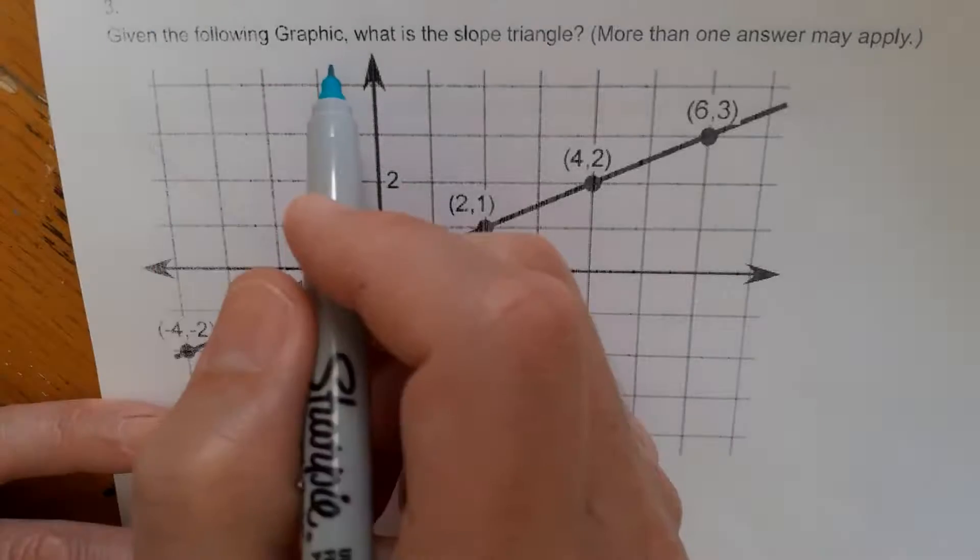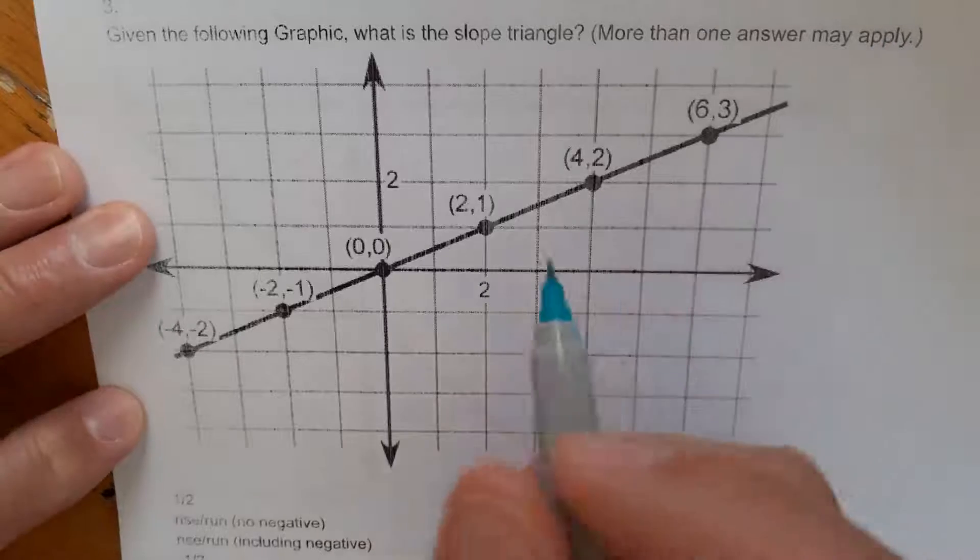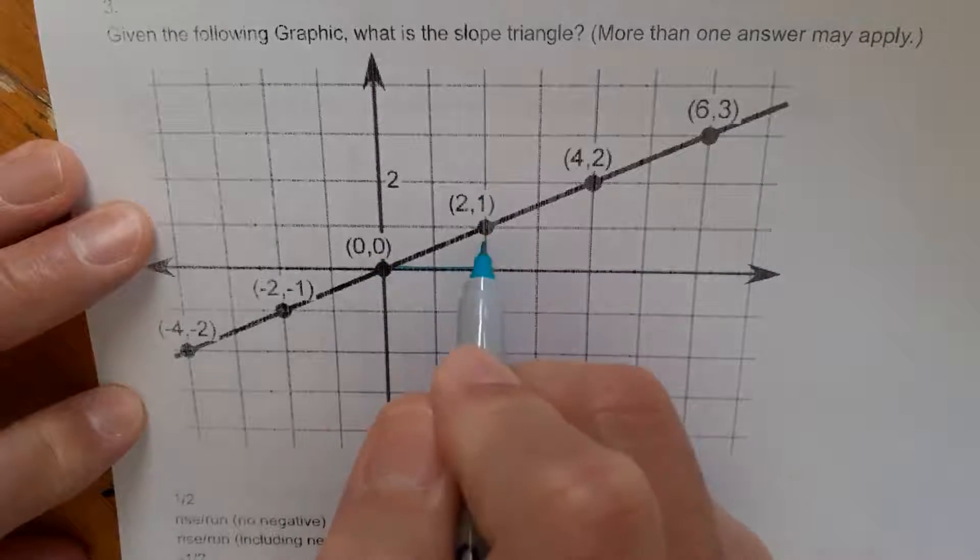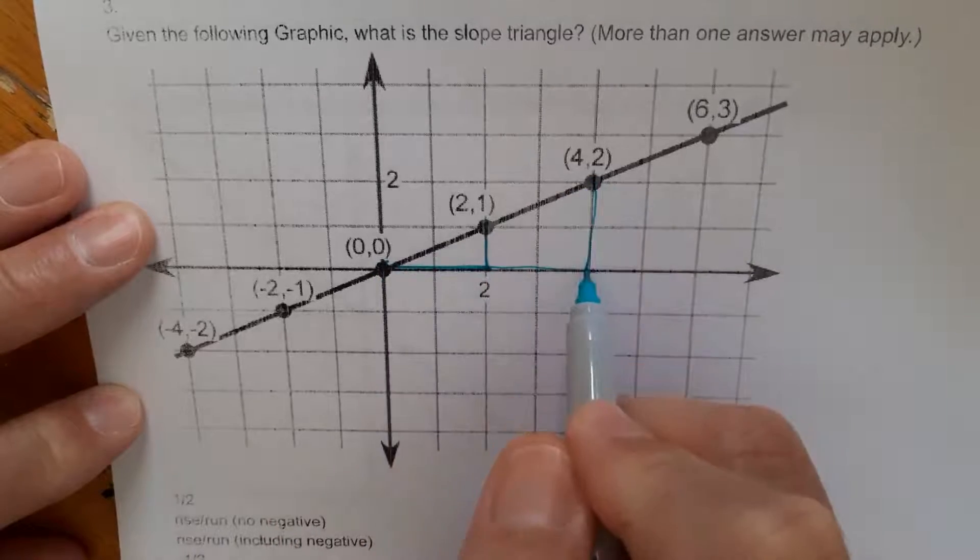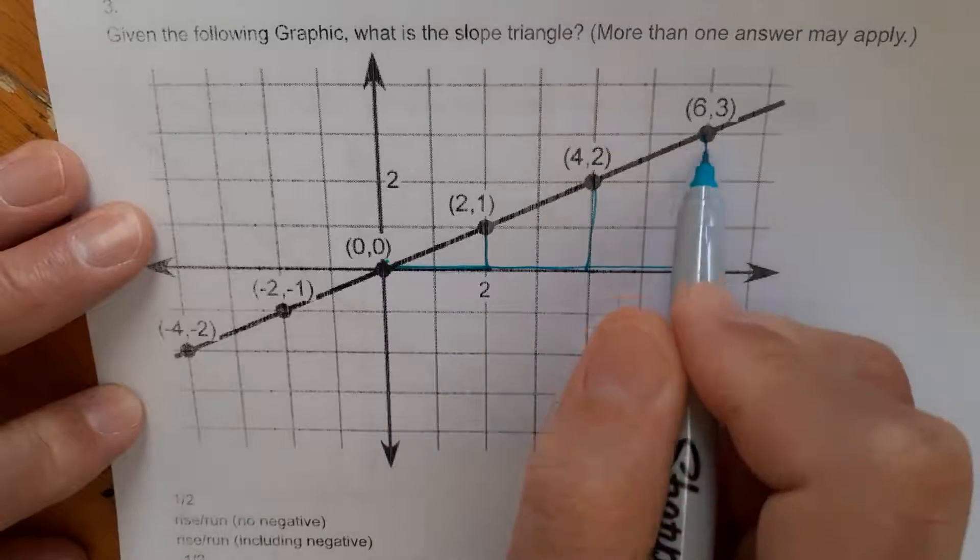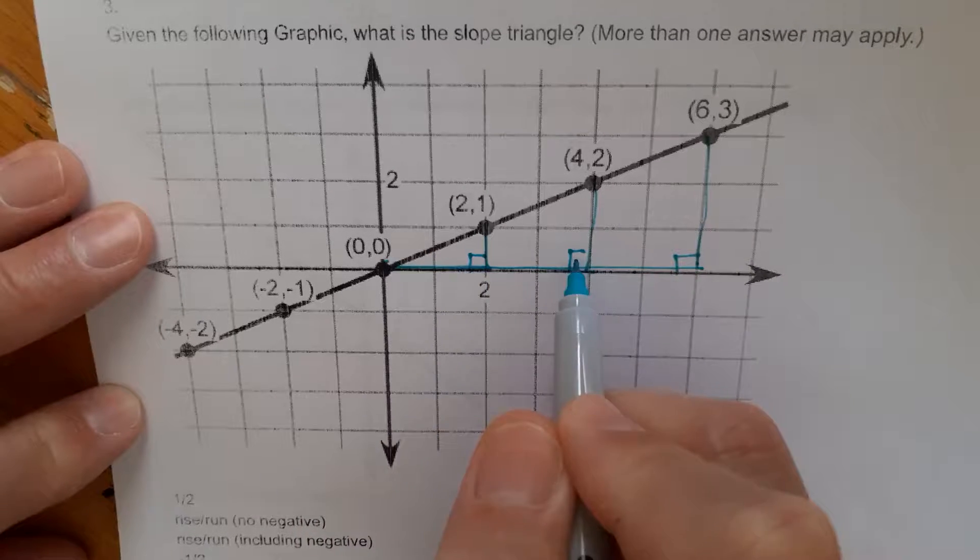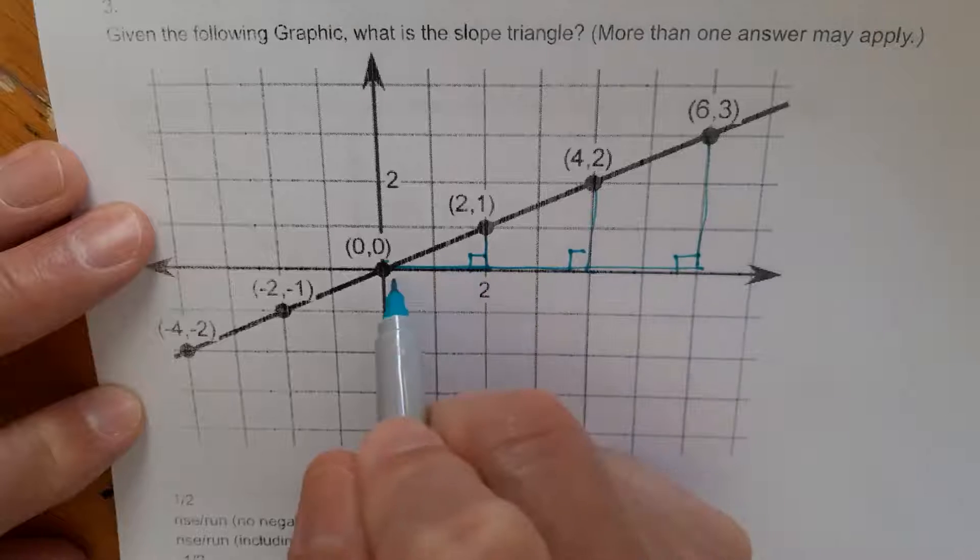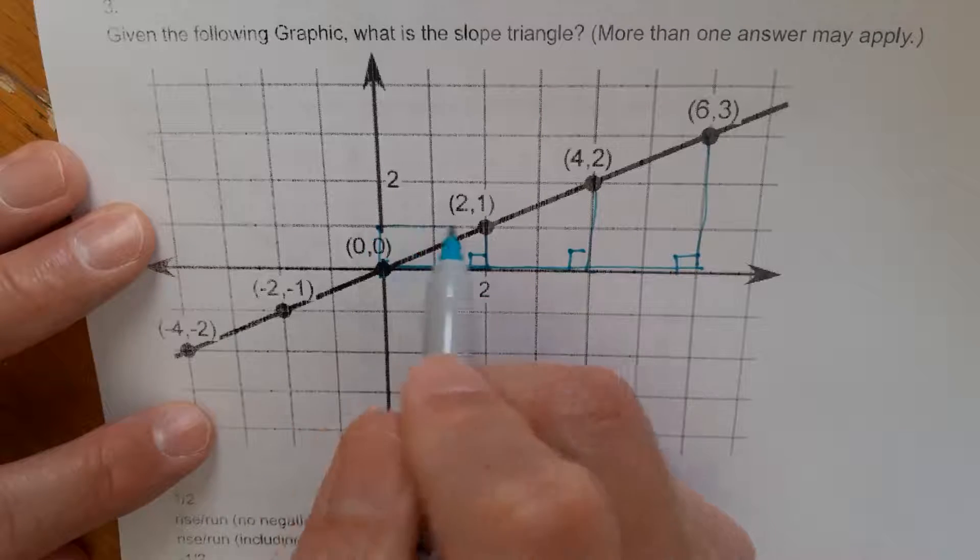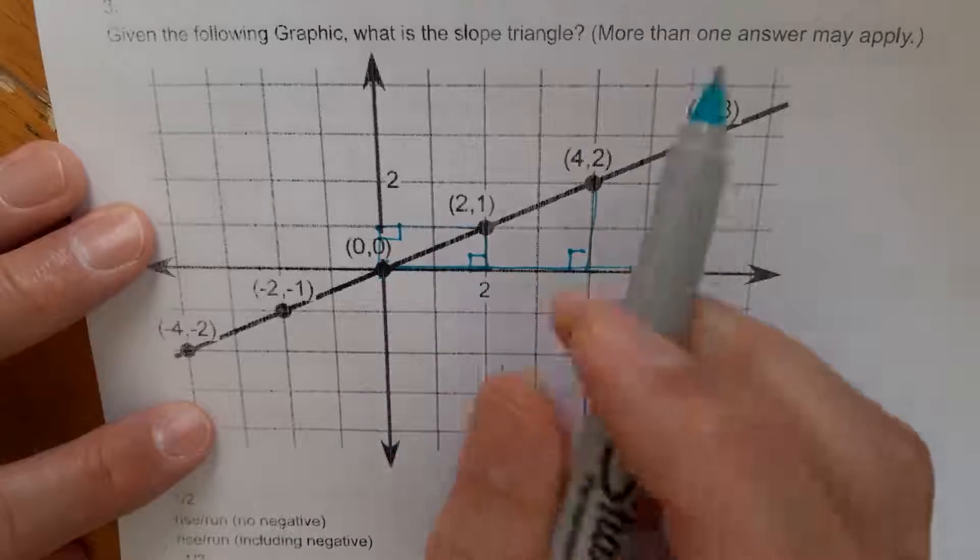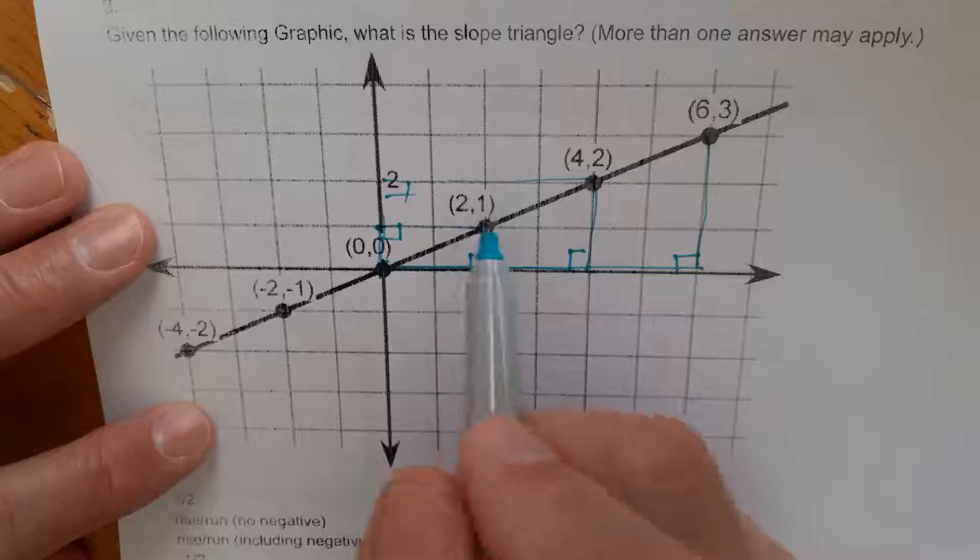So given the following graphic, what is the slope triangle? More than one answer may apply. So the slope triangle, let's find the right triangle in here. So here's a right triangle. Here's a right triangle. Here's a right triangle. So there's right triangles that repeat all across here. So right being 90 degrees in one of the angles. So if we count rise over run, then let's count this way, rise and run. Notice there's a right triangle there. Notice if we went up to here, there's another right triangle. So it depends how we look at this. Now there's another one up here. There's right triangles all over the place.